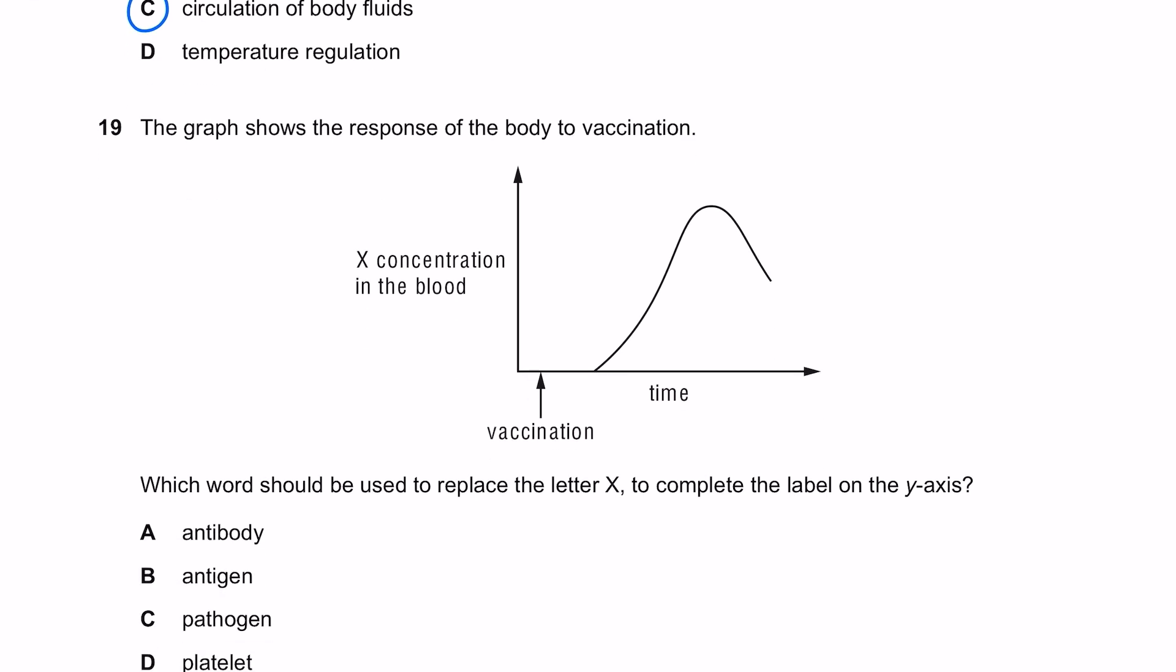The graph shows the response of the body to vaccination. Which word should we use to replace the letter X to complete the label on the y-axis? When you inject a vaccination, you're injecting a weakened or dead form of the pathogen. The antigen on the pathogen is recognized by lymphocytes which release antibodies, so that's why we're interested in antibody concentration of the blood. The answer here is A.